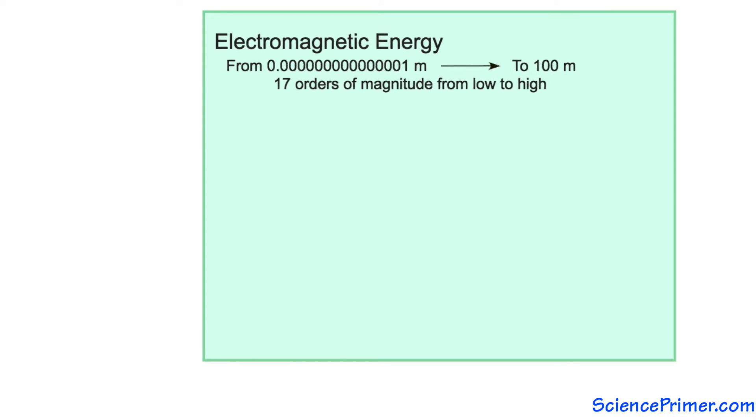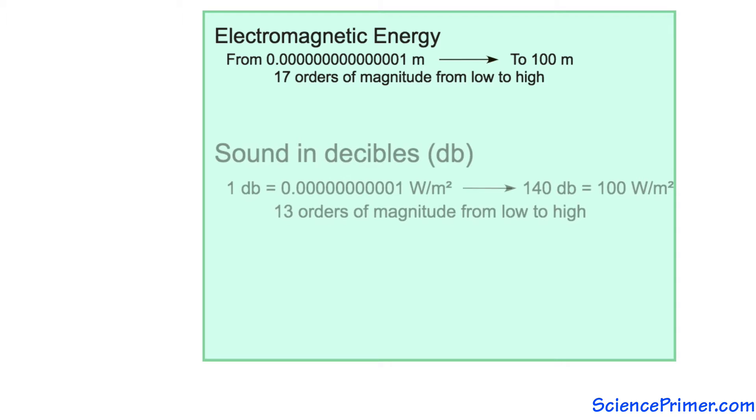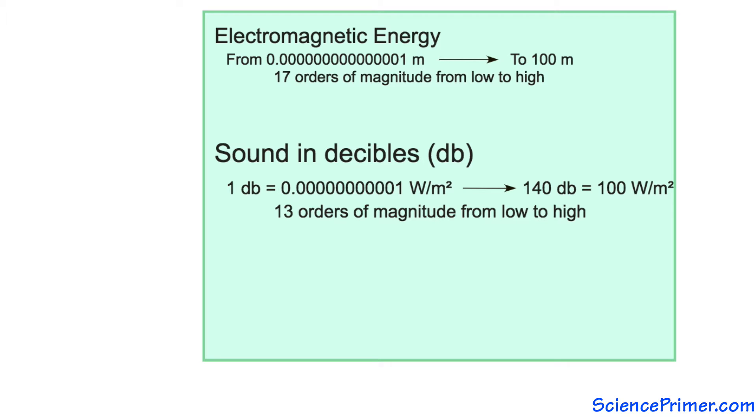Sound intensity is another scale that covers a huge range. We measure sound using the decibel scale. This scale ranges from 1 decibel, which is the lower limit of human hearing, to values well over 100 decibels, which are dangerously loud and can damage the human ear.